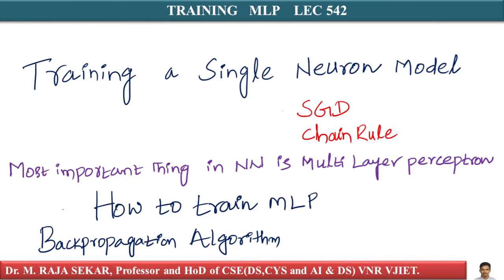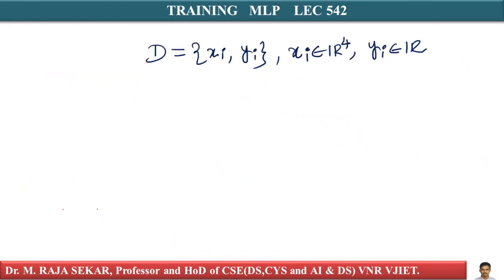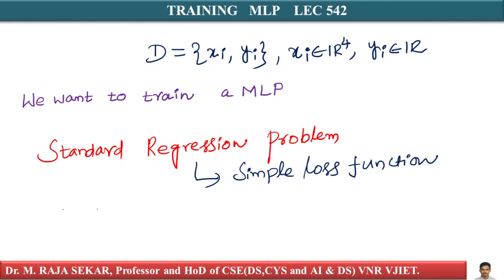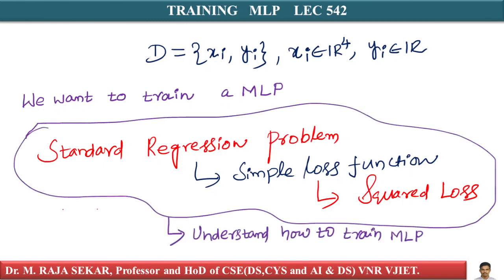Let's go into the notation we have already seen for representing multi-layer perceptrons. Imagine you have a dataset D equal to (xi, yi), where xi belongs to R⁴ — meaning xi is four-dimensional data — and yi belongs to R. We want to train a multi-layer perceptron on this standard regression problem. The loss function we use is the squared loss.